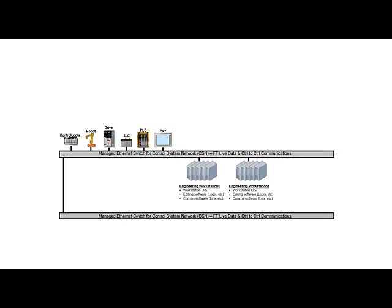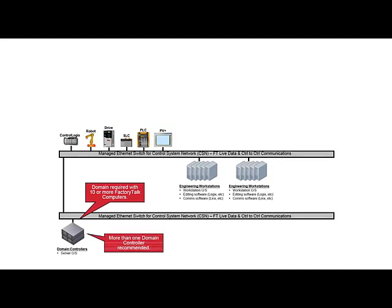Taking the network infrastructure as read, the first thing to consider is the Windows infrastructure. In this example, with 10 engineering workstations already in existence, we know that a domain will be required because FactoryTalk systems require a domain for 10 or more hosts. When implementing a domain, Rockwell commonly recommends at least two domain controllers, allowing for a more highly available domain in the event of a problem on the primary domain controller.